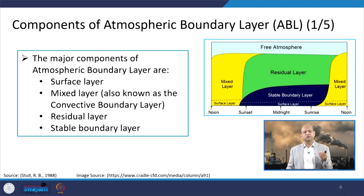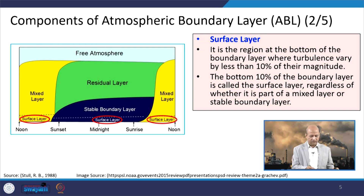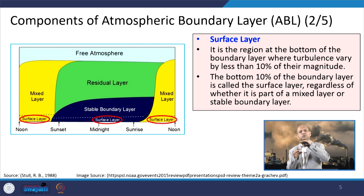The different components of the atmospheric boundary layer are given specific nomenclature: the surface layer, the mixed layer, the residual layer, and the stable boundary layer. The surface layer is the region at the bottom of the boundary layer — a very thin, lowest layer nearest to the earth's surface — where turbulence varies by less than 10 percent of its magnitude.